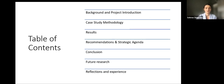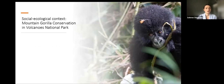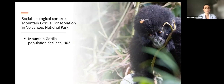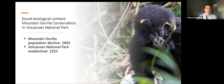Starting off, after their discovery and recognition as a species, mountain gorilla populations began to decline due to anthropogenic effects such as hunting, war, disease, deforestation, and the illegal pet trade. Soon after, Volcanoes National Park was established in 1925, becoming one of Africa's oldest national parks.